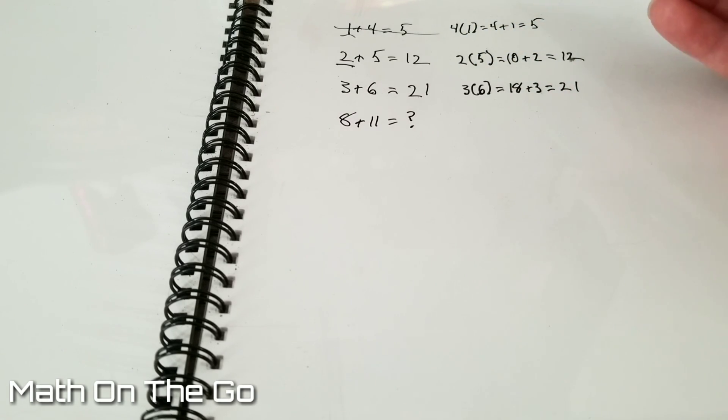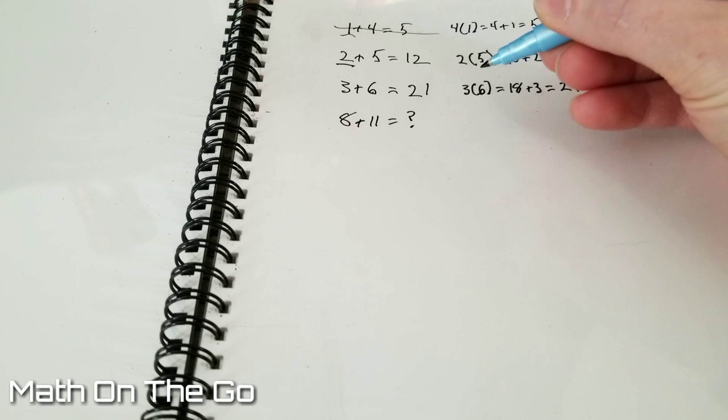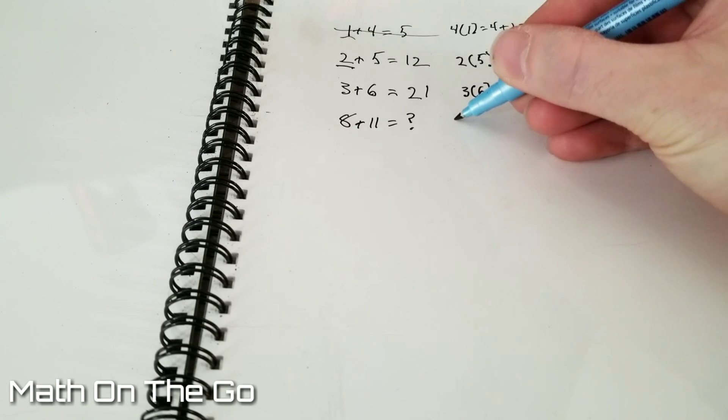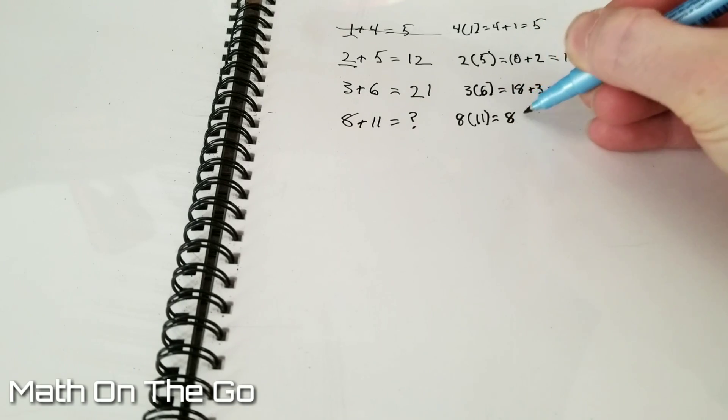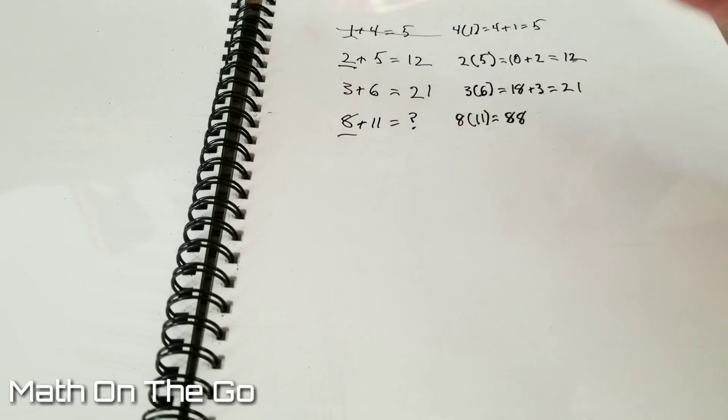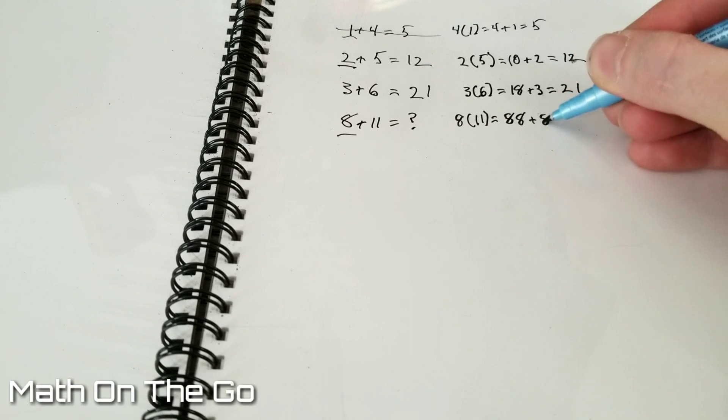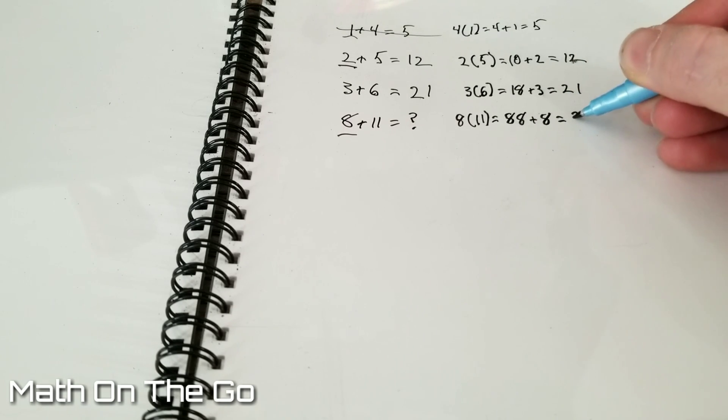So we got 8 plus 11. So again, we take the second digit and the first digit and multiply them together. So we get 8 times 11, which equals 88. And we add the first digit, plus 8 equals 96.